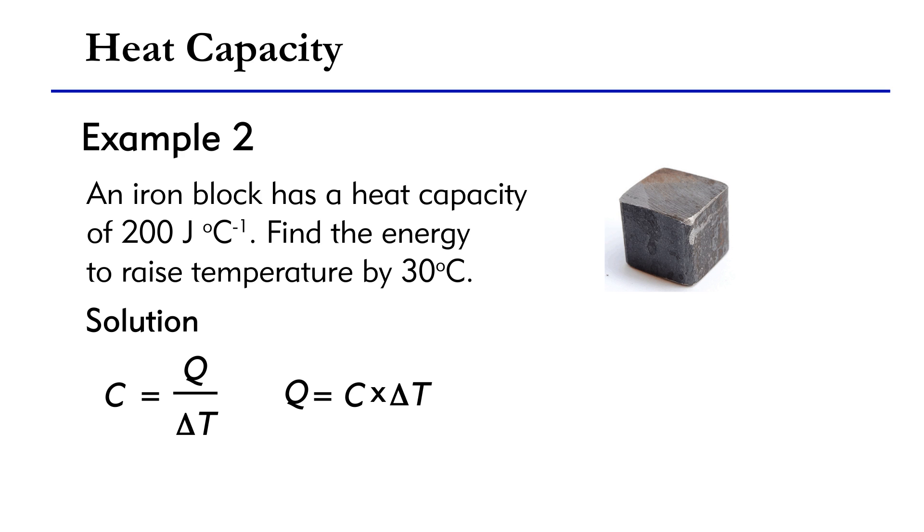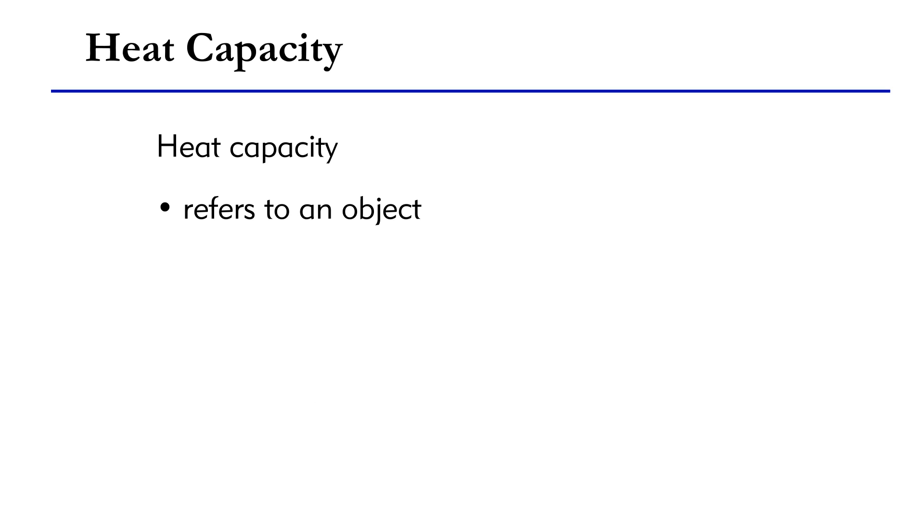Since C equals 200 Joules per degree Celsius and delta T is 30 degree Celsius, the energy required is Q equals 200 times 30 equals 6,000 Joules. But please note that heat capacity refers to an object.